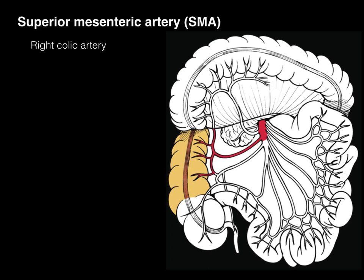The right colic artery is on the right side of the abdomen supplying the ascending colon. And then there's the middle colic artery going up to supply part of the transverse colon. The midgut ends somewhere along the transverse colon where the supply of the middle colic artery is ending.